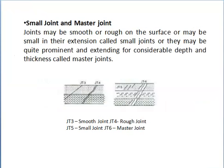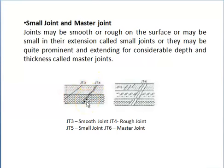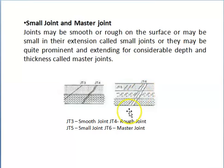Similarly, joints may be smooth or rough on the surface, and the surface may be straight or curved in outline. In this diagram, JT3 is a smooth joint with a straight outline, while JT4 is a rough joint with a curved outline. Joints may also be small in their extension, called small joints — JT5 is a small joint — while joints extending for considerable depth and thickness are called master joints, such as JT6.